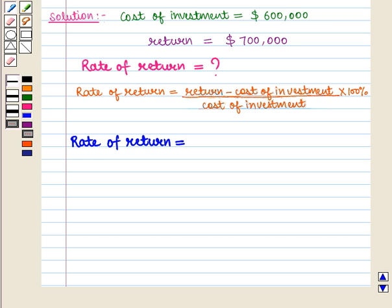Now putting all the values in this formula we get rate of return will be equal to $700,000 minus $600,000 whole upon $600,000 into 100%